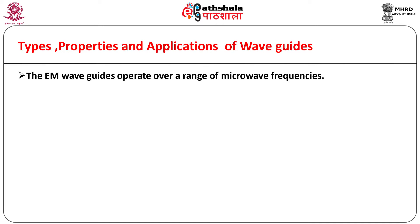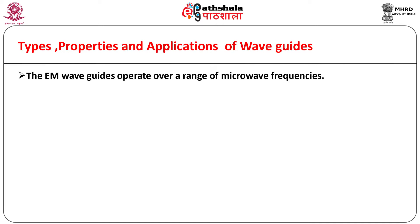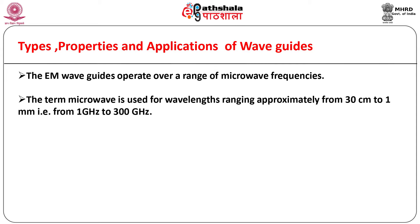The electromagnetic waveguides operate over a range of microwave frequencies. The term microwave is used for wavelengths ranging approximately from 30 cm to 1 mm, i.e., from 1 GHz to 300 GHz. However, this range has undergone several revisions.